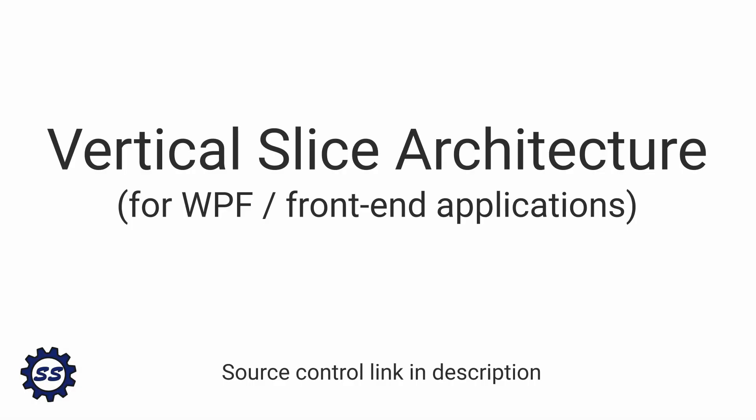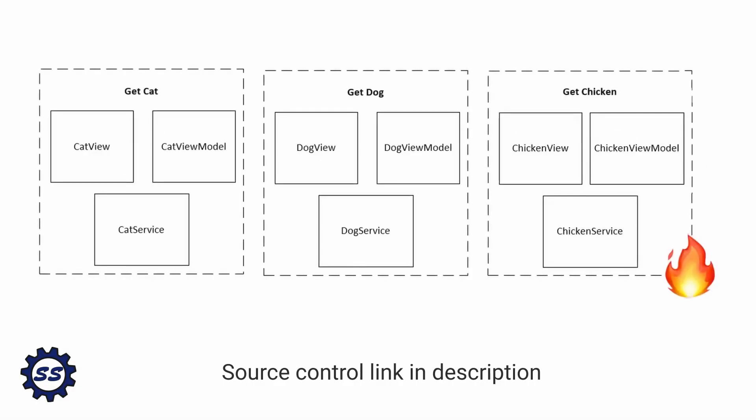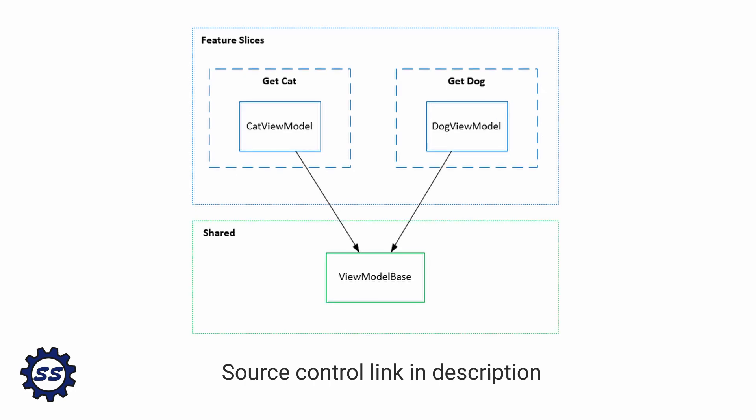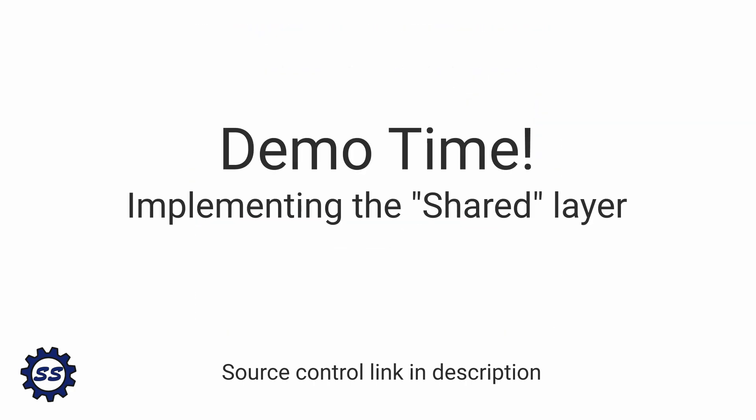A key concept of vertical slice architecture is to organize domain and application logic into cohesive slices. But what if we have a construct that's used in many slices and isn't related to our domain at all? If we want to reuse this construct in multiple slices, we'll need a layer underneath our slices that all slices can depend on to leverage shared functionality. So let's create that layer to contain common non-domain related constructs.